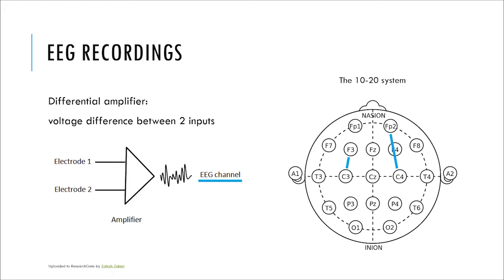To further consider why the montage has an effect on spatial resolution, we have to consider that EEG is recorded with a differential amplifier — the EEG machine records the voltage difference between two inputs, which are the electrodes placed on the patient's scalp. You have electrode one and electrode two, both giving input into an amplifier, and you get one EEG channel out of this. Electrodes are placed using the 10-20 system, which stretches with a person's head so that all electrodes are equidistant in a 10-20 design.